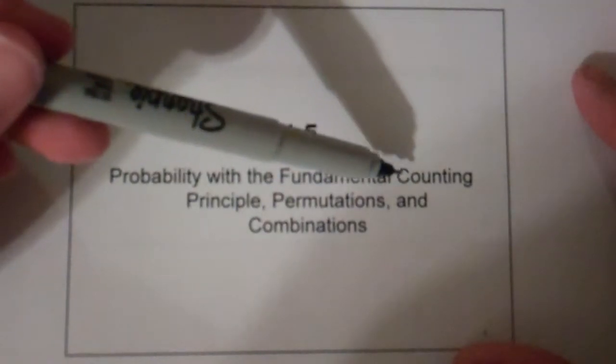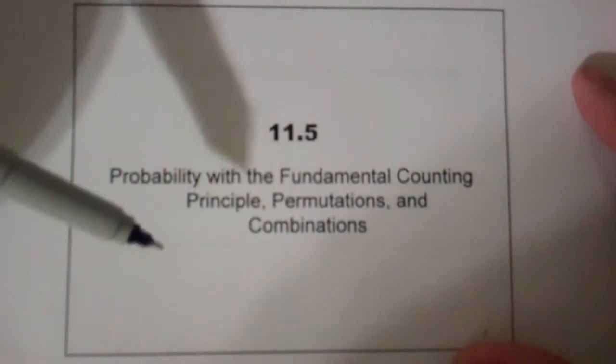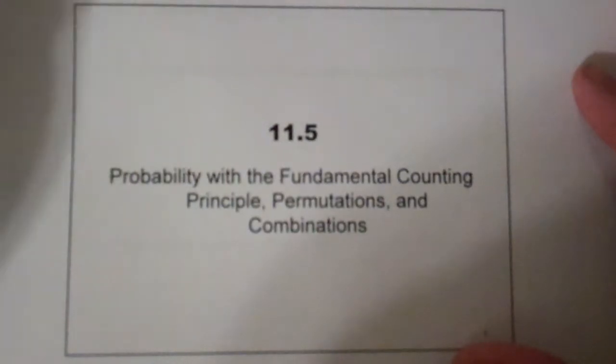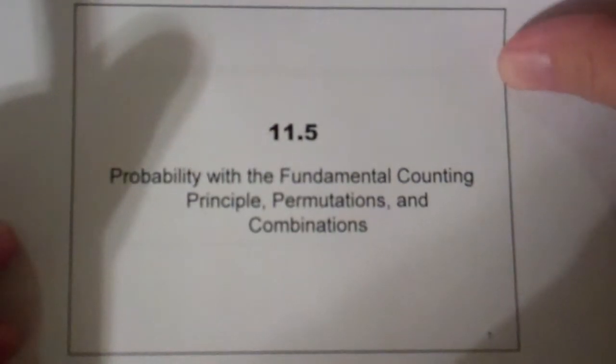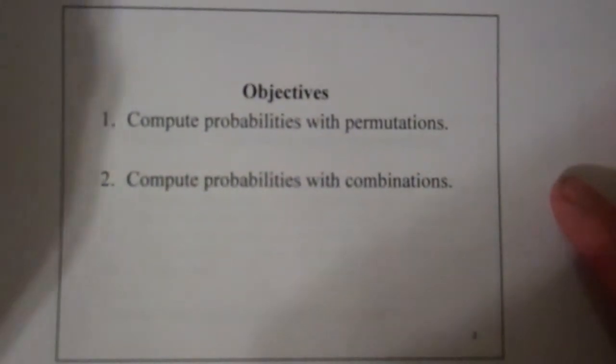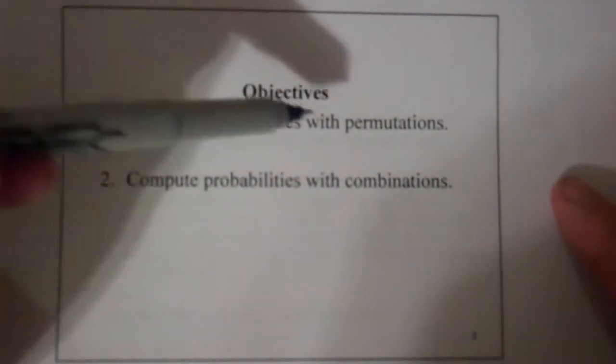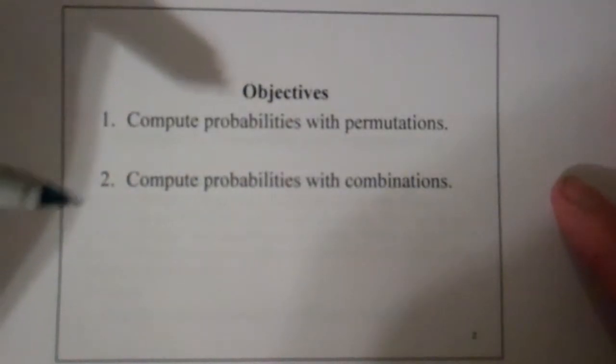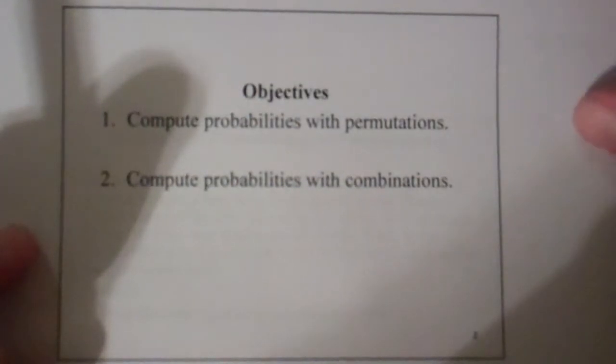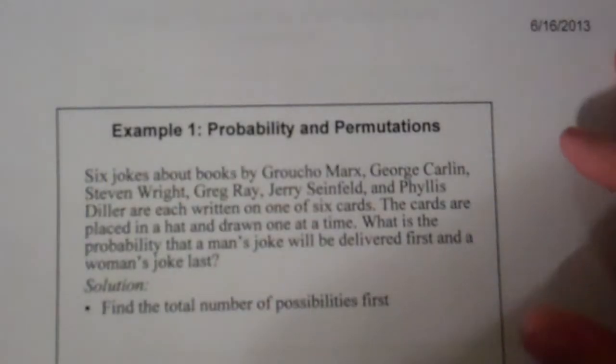So we're going to use the ideas of counting principles to help us figure out the probability of a particular event that we're interested in. Which means we're going to have two objectives: the ability to compute probabilities with permutations where order does matter, and compute probabilities with combinations where order does not matter, from the last chapter.